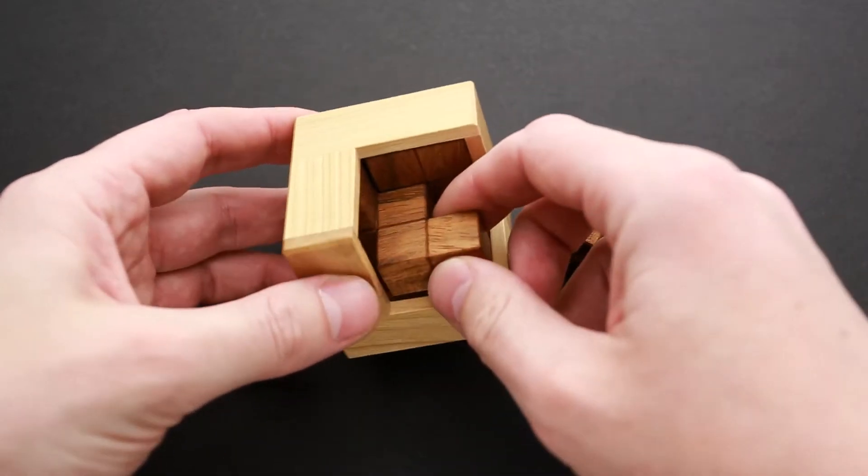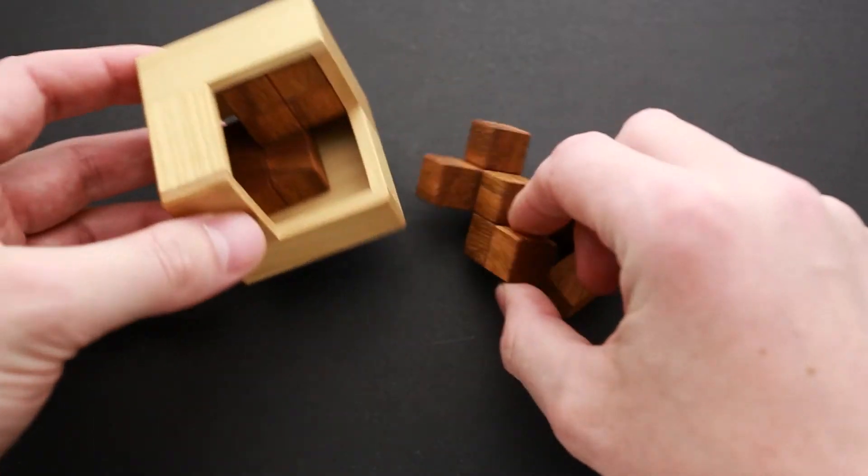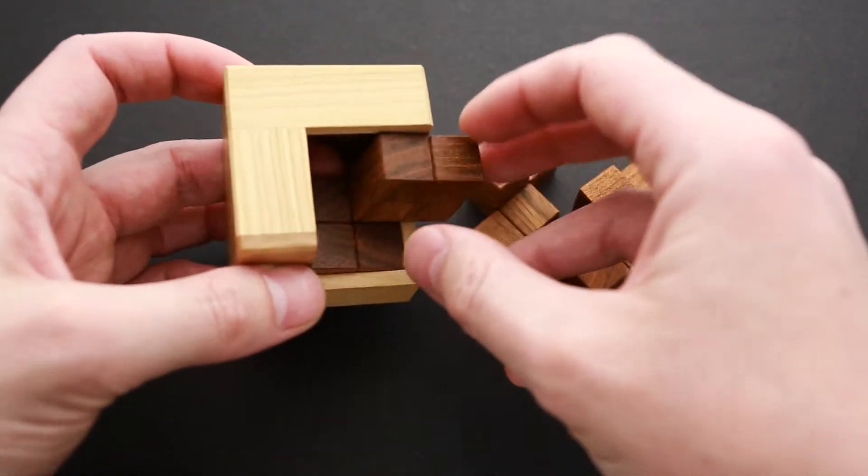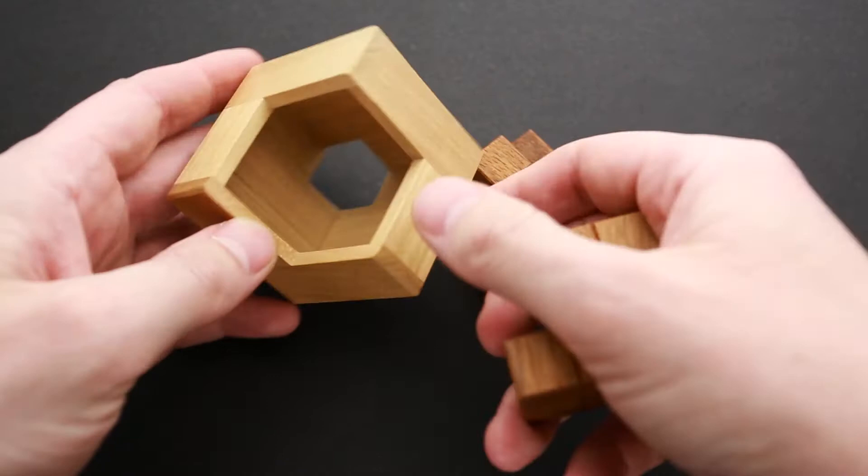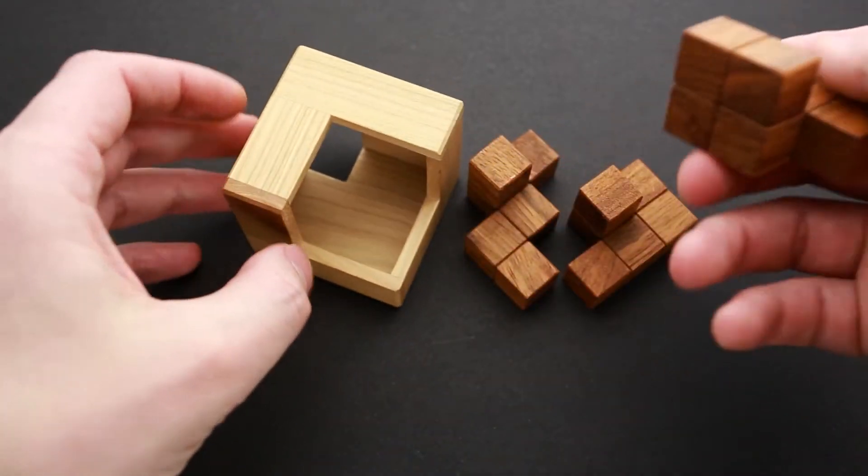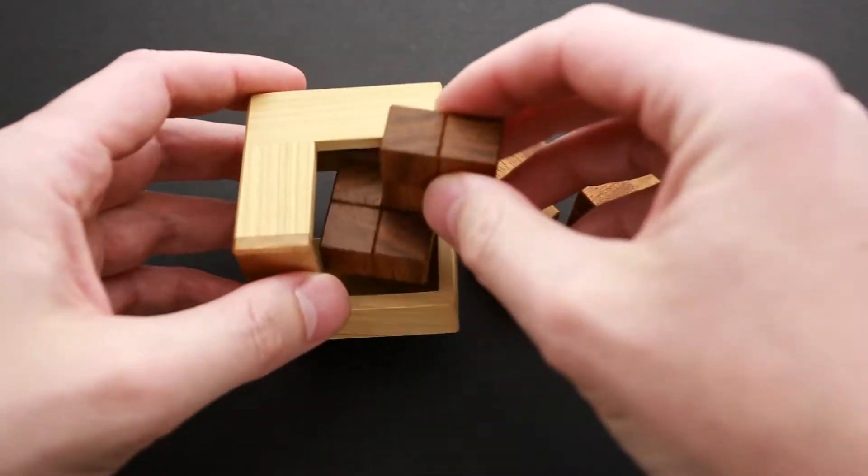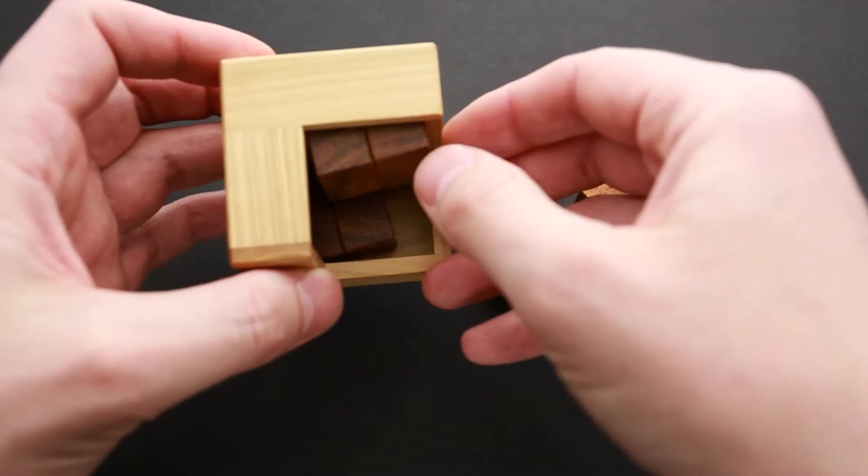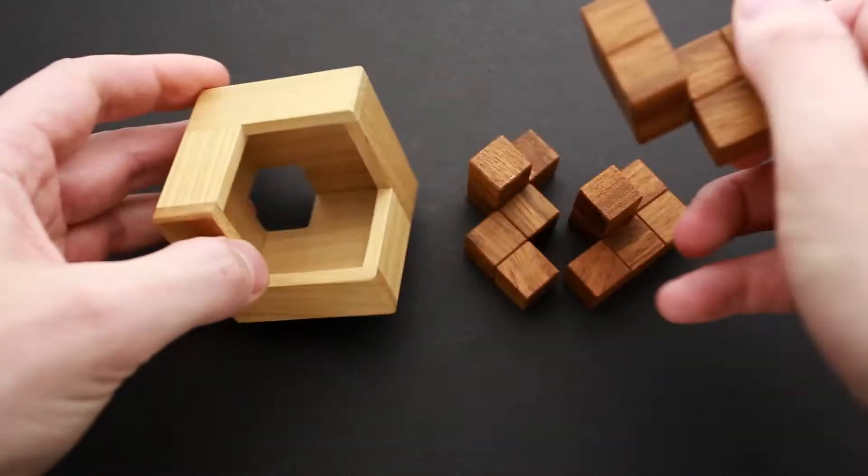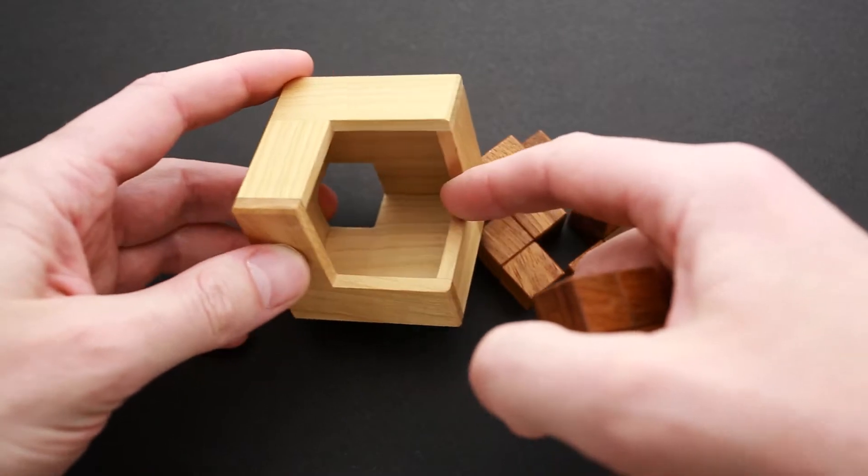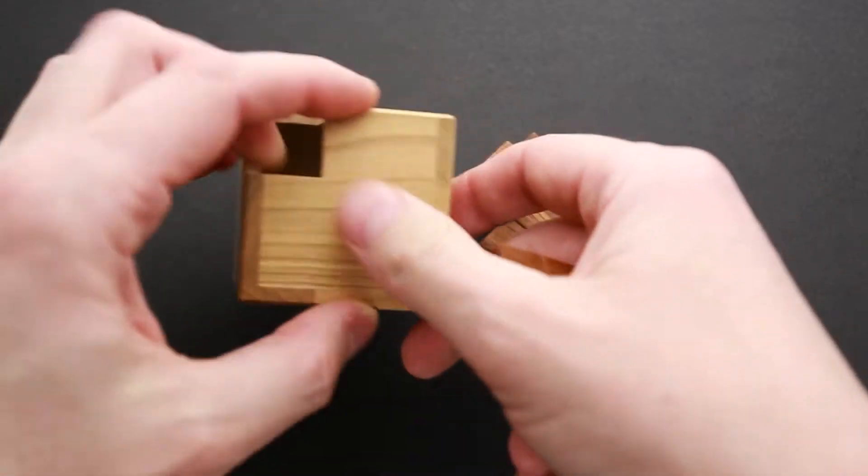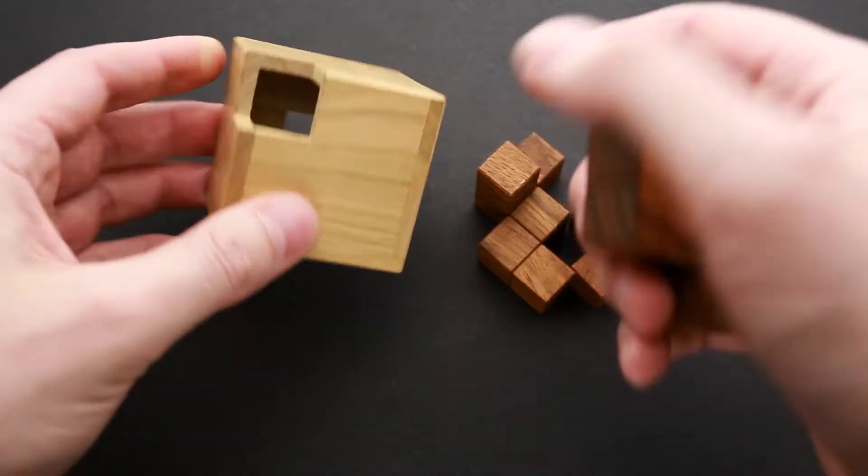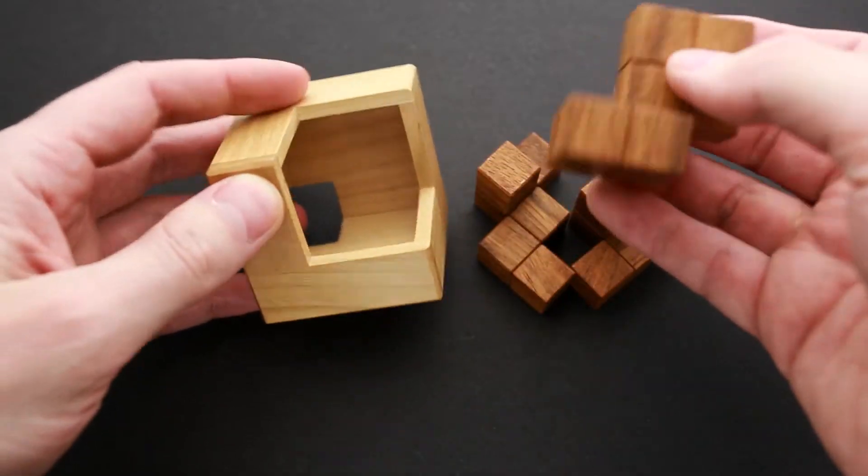The object is to fit all three parts into the frame. This puzzle comes unsolved. All three parts are inside in a random way and you have to put them inside in such a way that both openings, one big on one side and one small on the other side, will be covered with pieces.